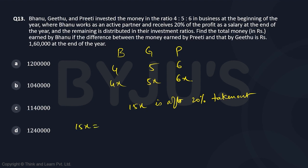Which means 15x is 80% of total, or the total money should be 15x by 0.8. So the total money with them before paying off the salary is 15x by 0.8. That is going to be 150x by 8, or this is going to be 75x by 4.